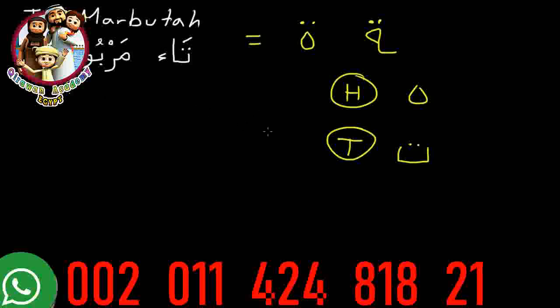If you look at the word Marbuta with the Ta Marbuta at the end, and you put a Lama here: normally if you stop at the end of the word and don't continue to the next word, you won't pronounce the mark above it, so it will just be Ta Marbuta. But if you're saying another word after it and want to keep the flow, you connect it and it becomes Ta Marbuta Tu.